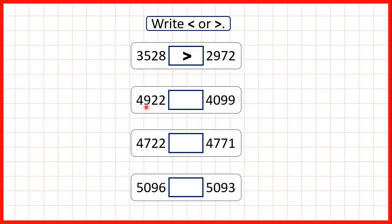Now we have 4922 and 4099. Again, we need to remember to compare larger place values first, so here that's our thousands place value. But both numbers have four thousands, so what we do is go to the next place value column along and compare the hundreds. Here we can see the first number has nine hundreds, and the second number doesn't have any. Now it doesn't matter that this second number has nine tens and nine ones, because even those taken together are less than just one hundred.